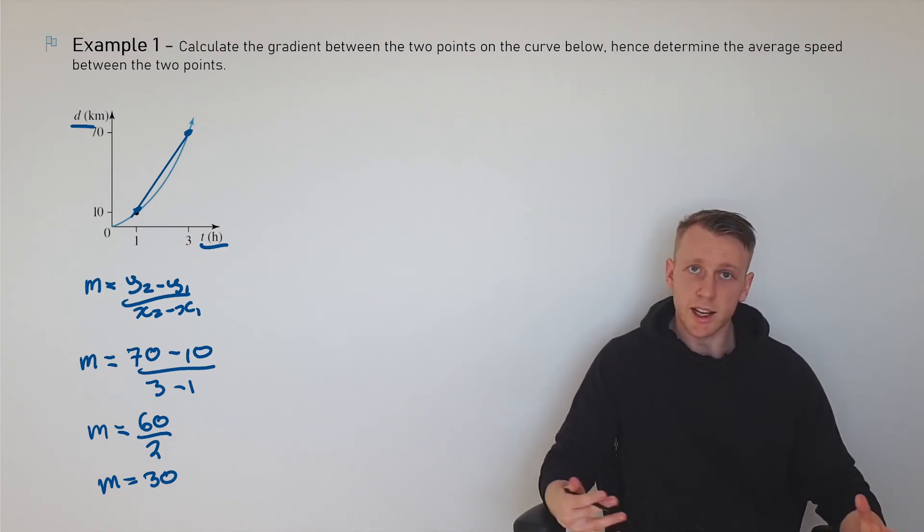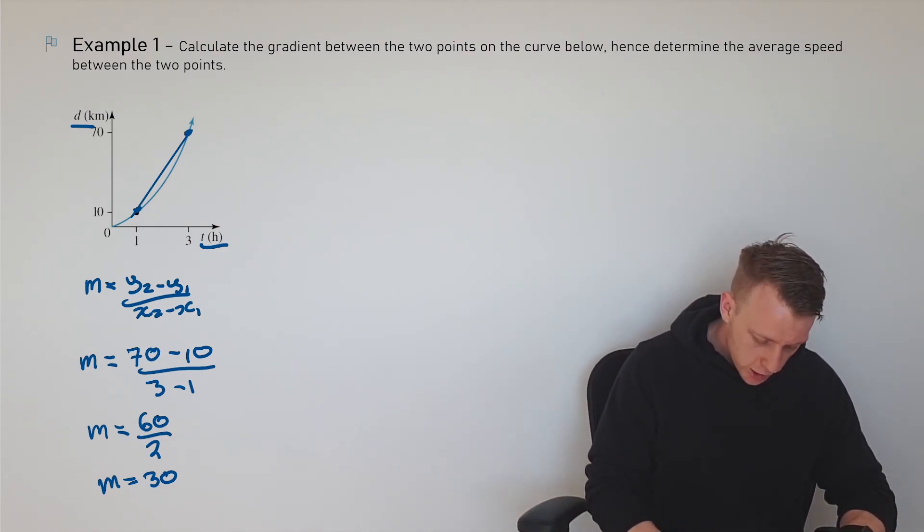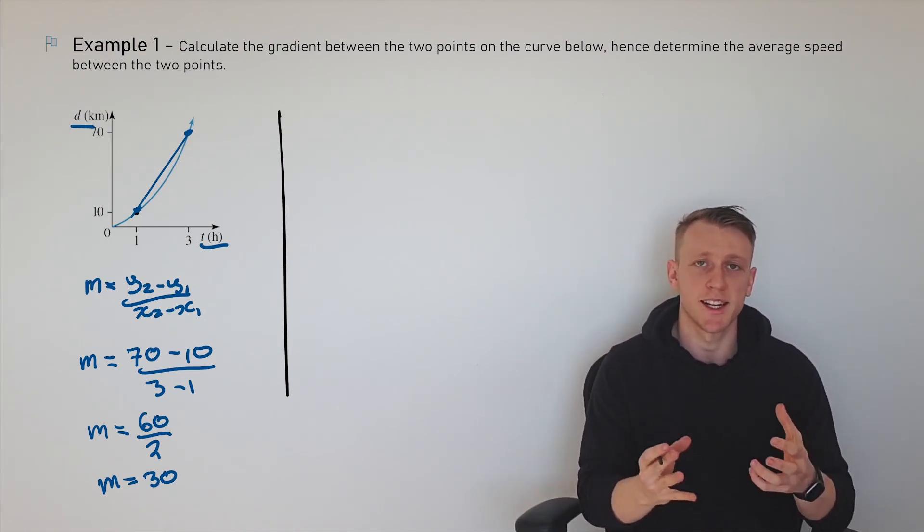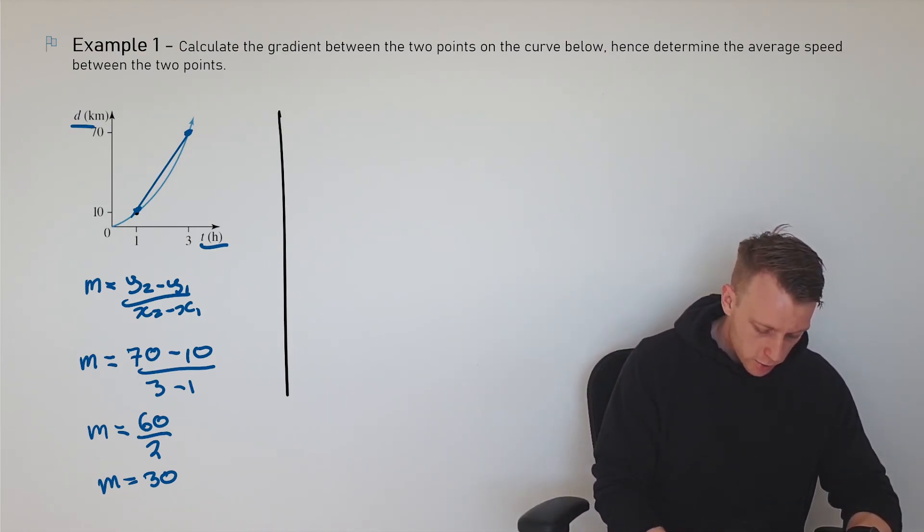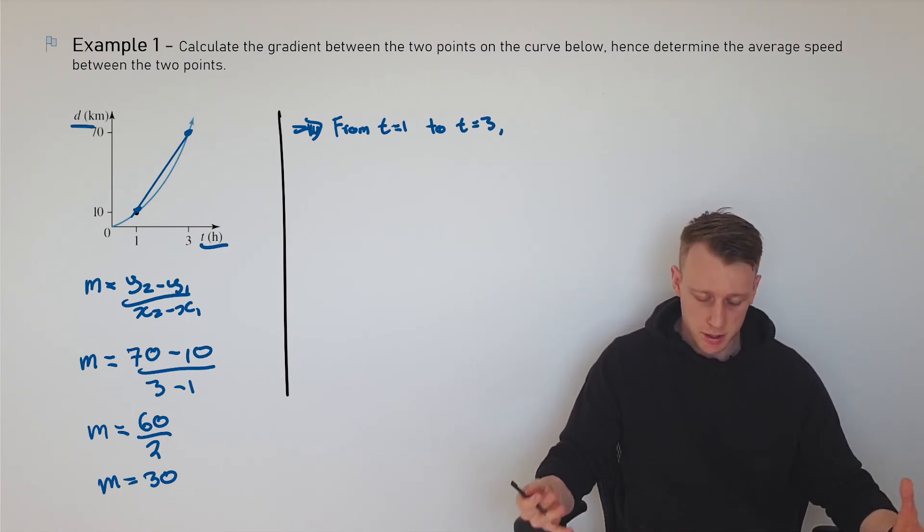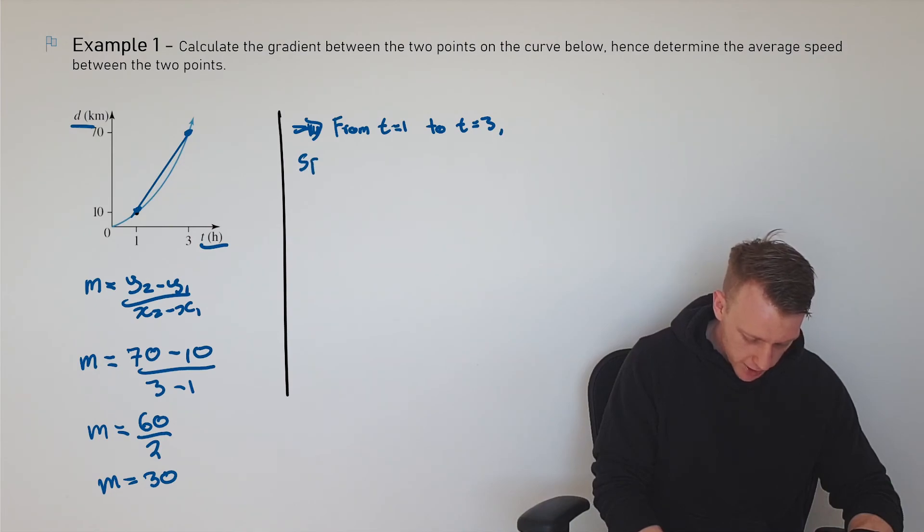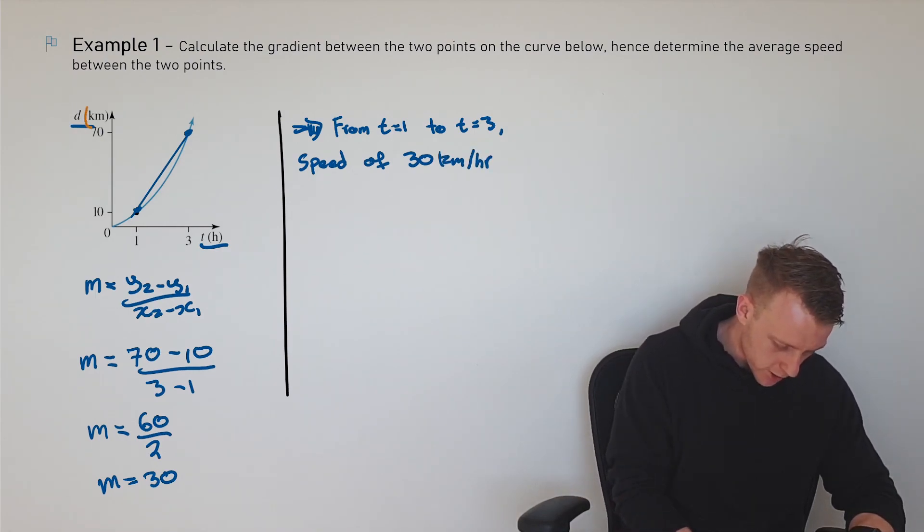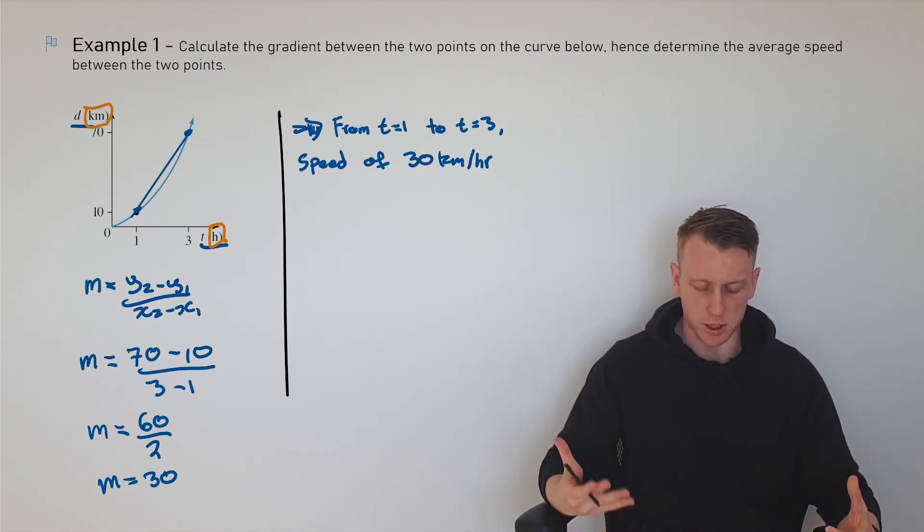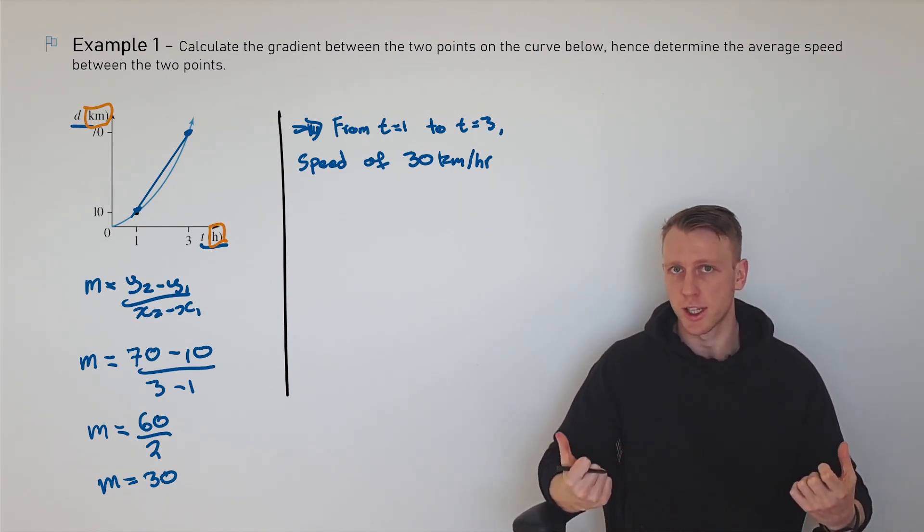We work out that that gradient is equal to 30. But what this is actually implying, what the gradient is implying: this gradient here implies that between the points, from t equals 1 to t equals 3, whatever this thing was, it was traveling at a speed of 30 kilometers per hour. I'm saying kilometers per hour because this is kilometers and this is per hour. Those are just the units I'm given. It's the interpretation they'll really try and get out of it.